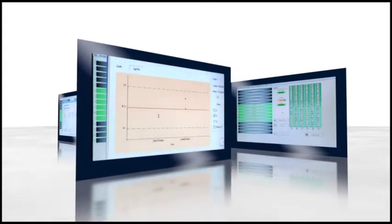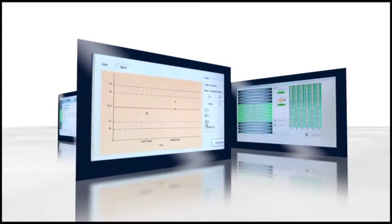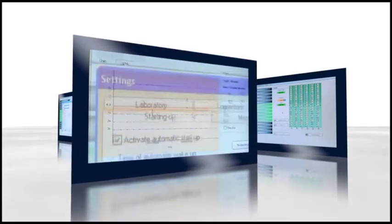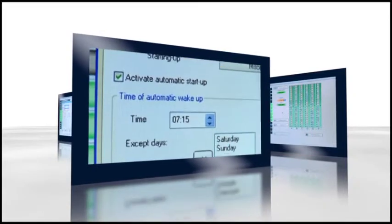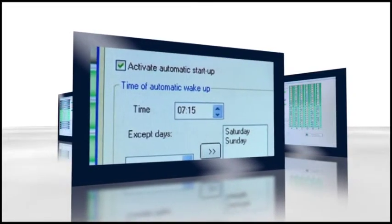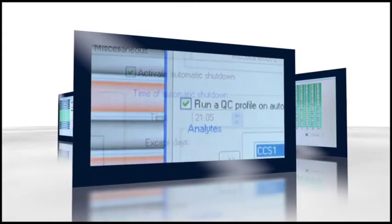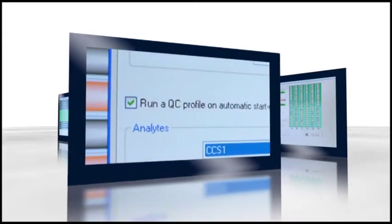The quality controls are managed utilizing Westgard rules and familiar graphical charts such as Levey-Jennings. Routine system maintenance is monitored and scheduled through its alarm clock function. The IDS Isis can perform most of its daily maintenance and QC checks before the working day has begun.